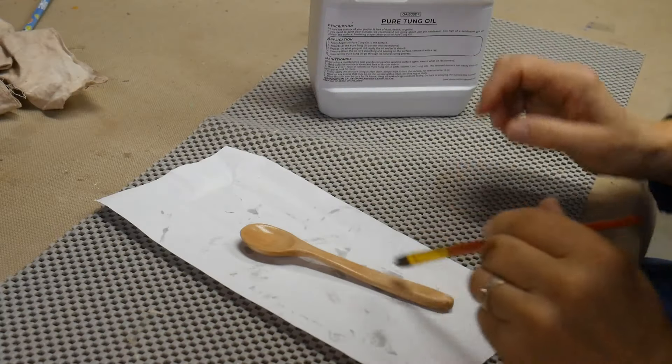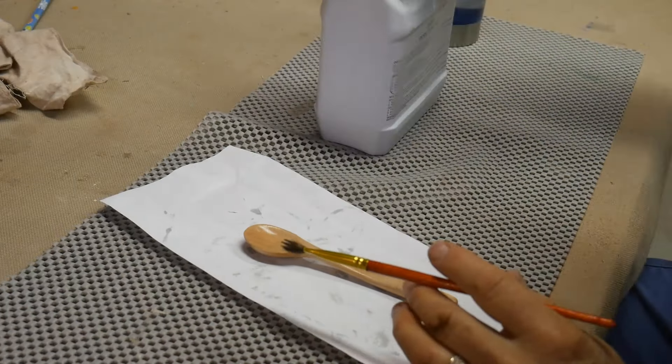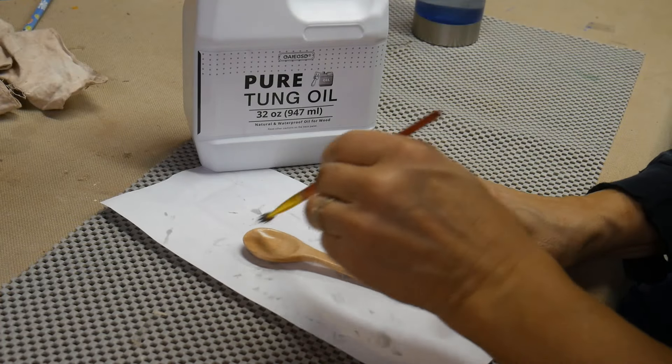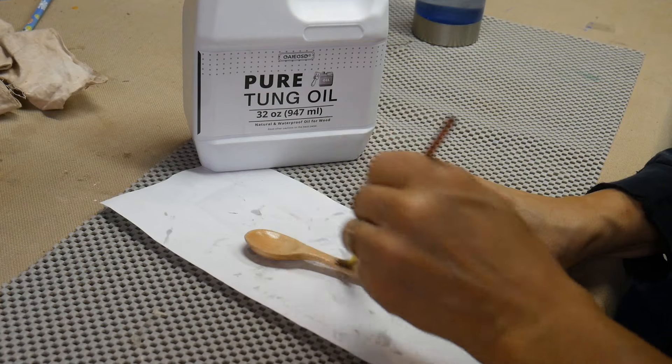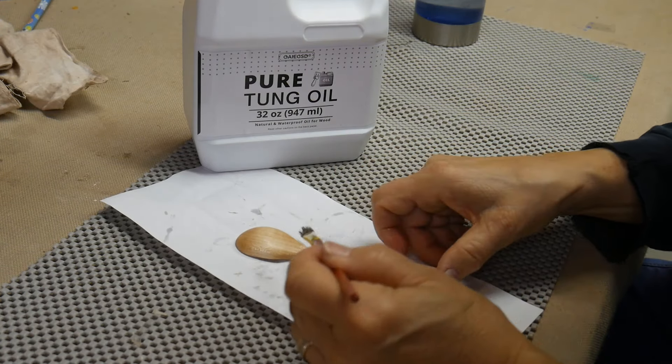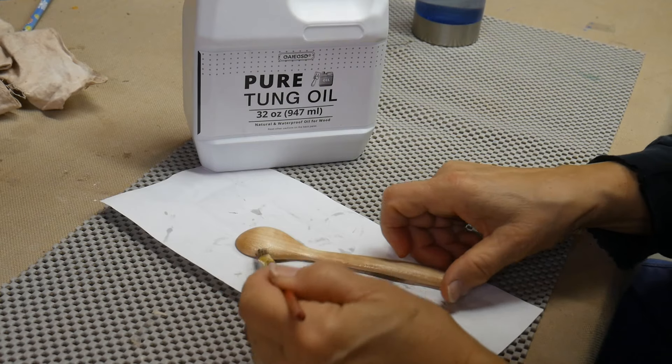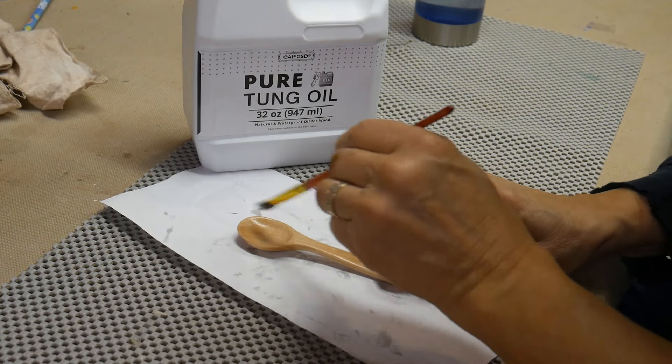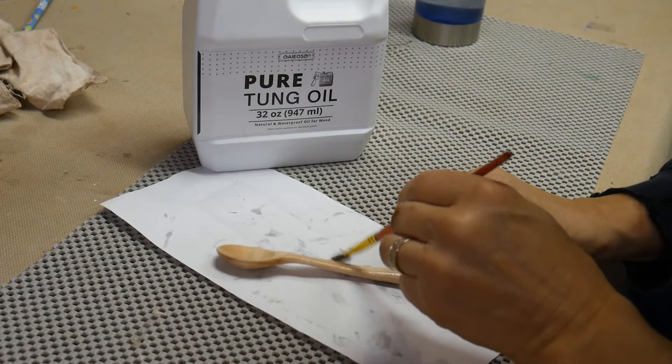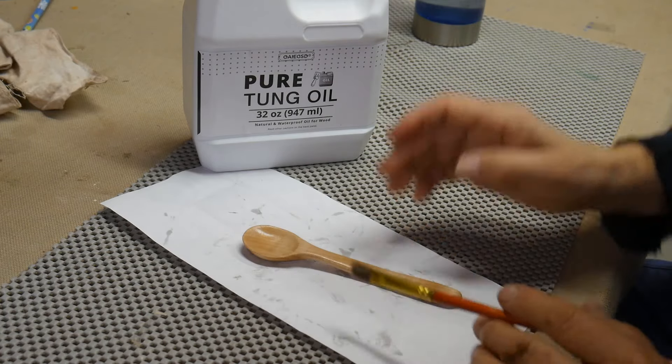Now what I have put on this is pure tung oil, and this is a food grade safe tung oil. You could also use mineral oil for this. Now what I understand is mineral oil actually lays on top and seals on top. Tung oil actually penetrates into the wood and helps it become a little bit more waterproof, and I'll let it sit for 24 hours and reapply again and put at least two coats on this.